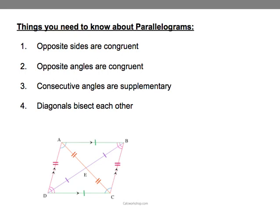One is that opposite sides are congruent. Two is that opposite angles are congruent. Three is that consecutive angles are supplementary. And four is that diagonals bisect each other.